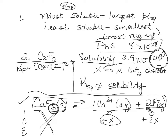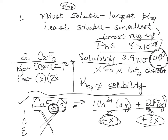Plugging in the equilibrium values from the ICE table: calcium was simply X and fluorine was 2X. Whenever you have a coefficient inside parentheses in a KSP problem, it's also going to be an exponent — you'll always feel like you did something twice, but that's how it should be. When we do the math, we get that KSP equals 4X cubed.